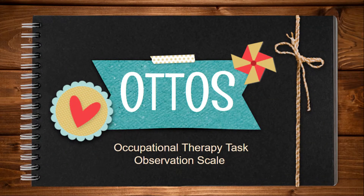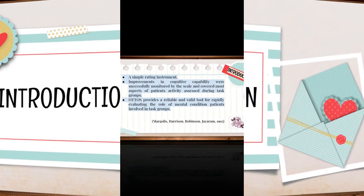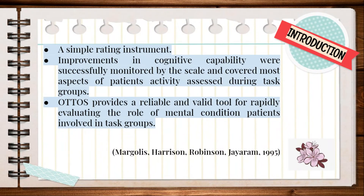Occupational Therapy Task Observation Scale, OTOS. First is the introduction of OTOS. The Occupational Therapy Task Observation Scale is a simple rating instrument. Few studies found that improvements in cognitive capability were successfully monitored by the scale and covered most aspects of patients' activity assessed during task group. Preliminary results show that OTOS provides a reliable and valid tool for rapidly evaluating the role of mental condition patients involved in task group.